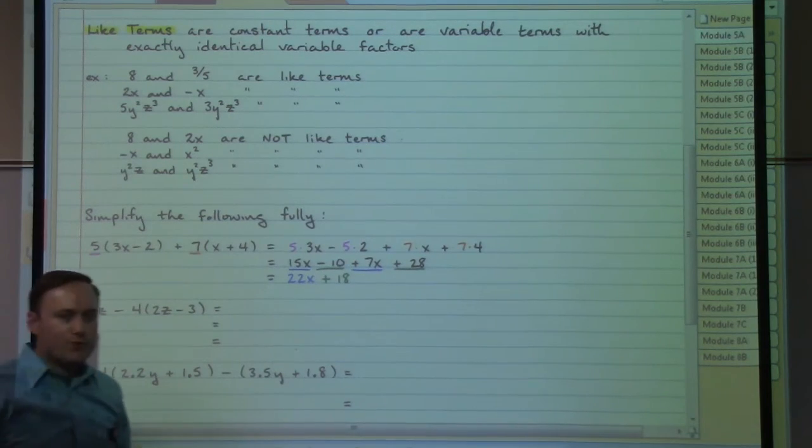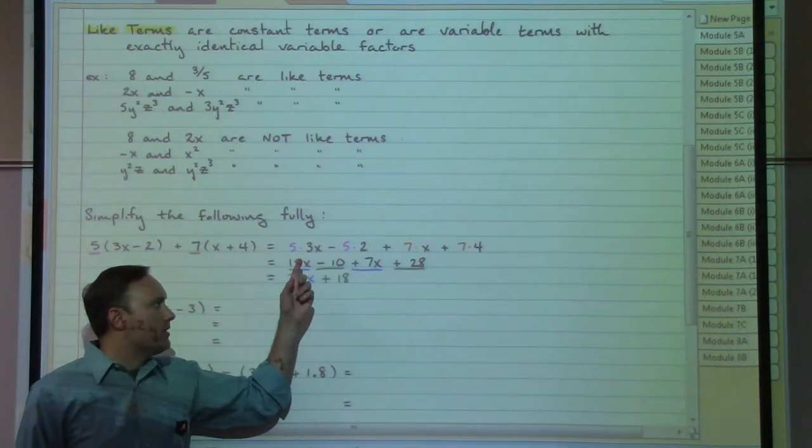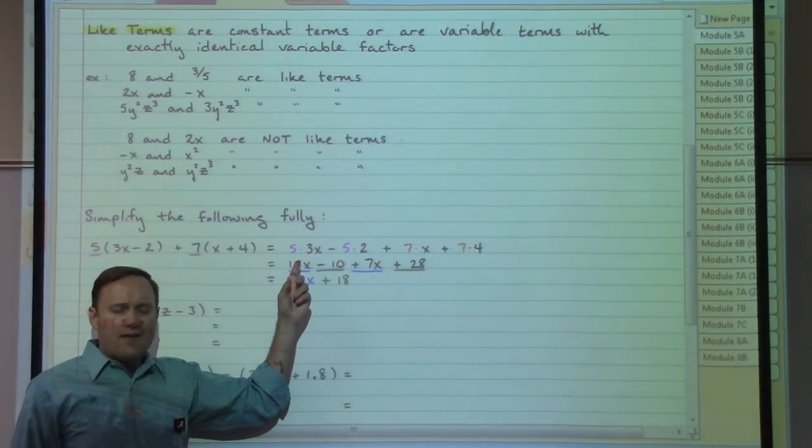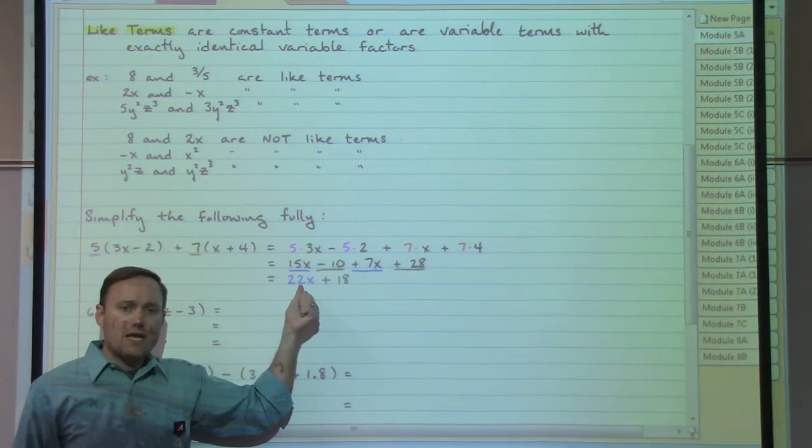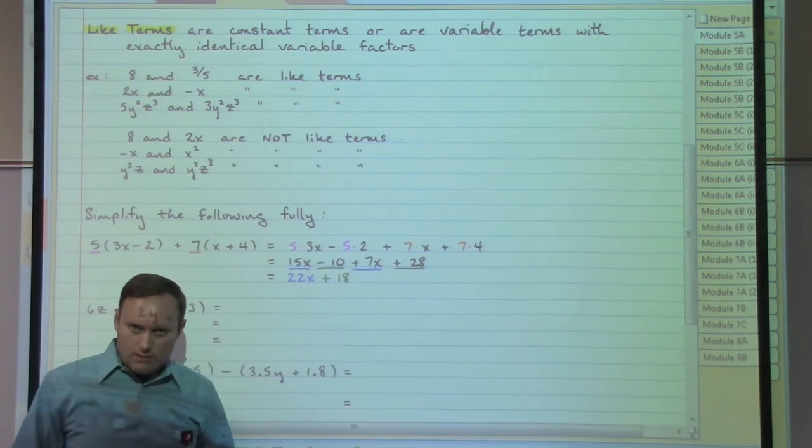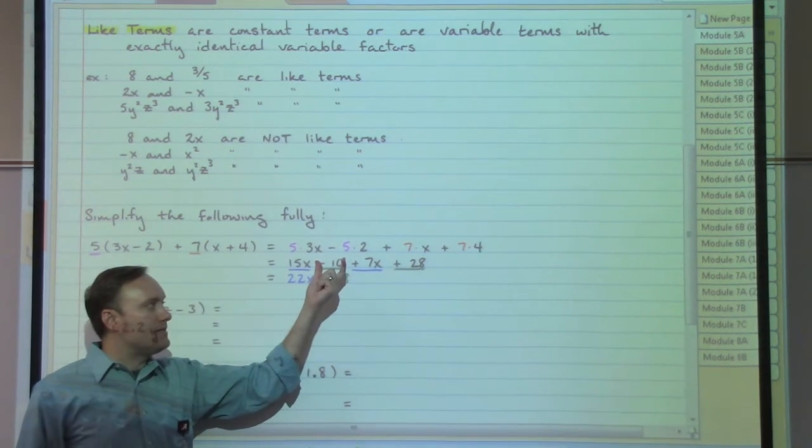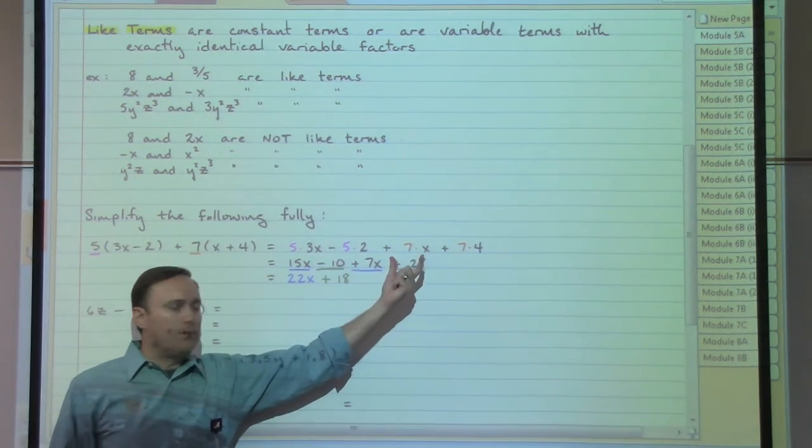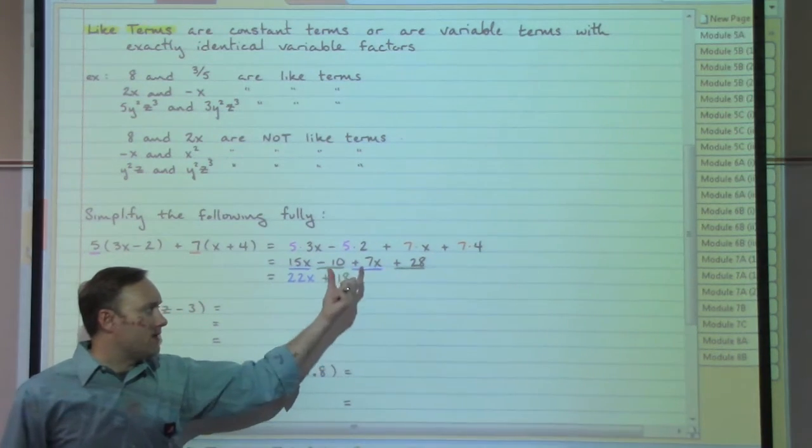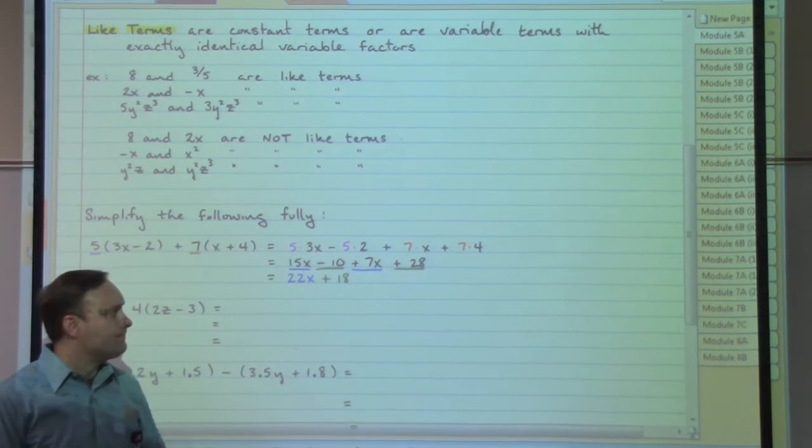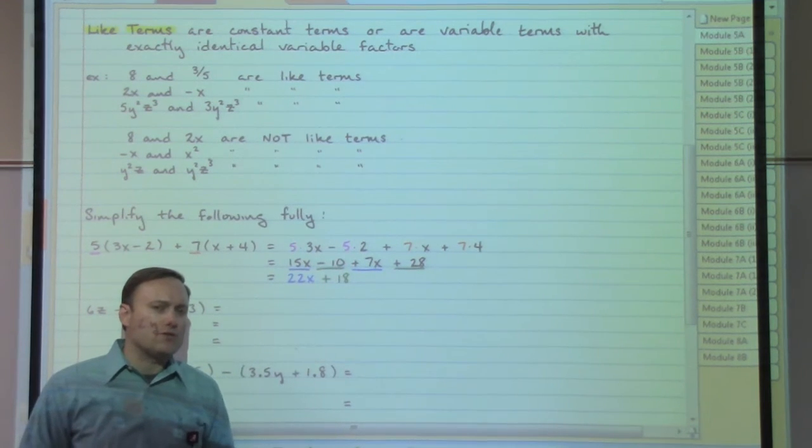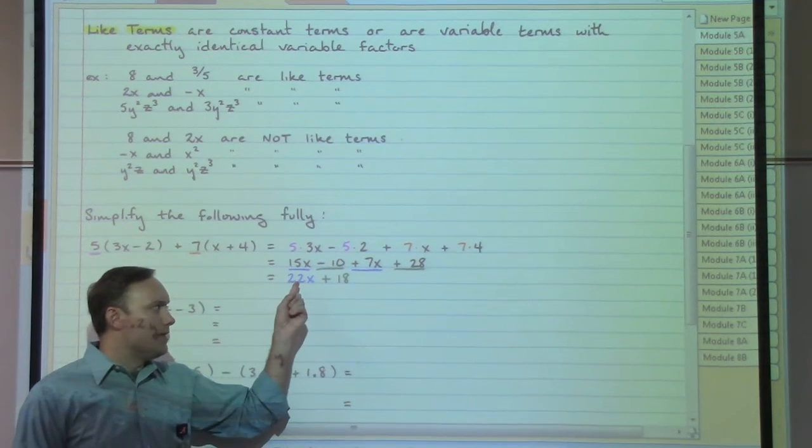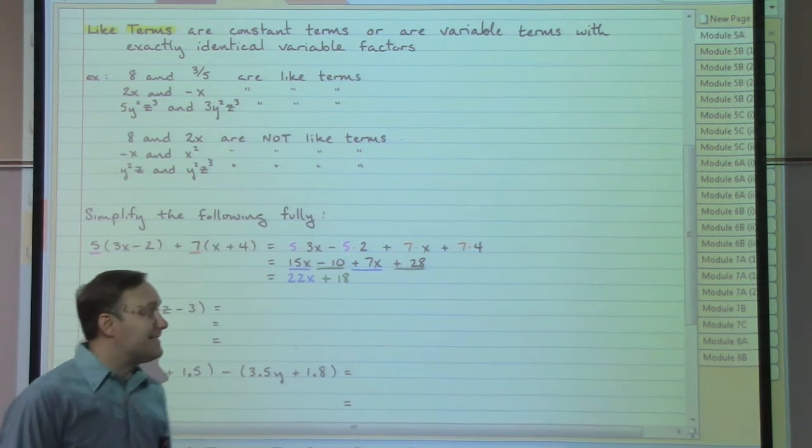After we've done the distributing, we've freed things up from their parentheses and can worry about like with like. We've got things with x's: 15x and 7x can be put together. We've got plain old numbers or constant terms: negative 10 plus 28, put those together to get 18. These two have to stay separated, so there's no shorter answer than 22x plus 18.